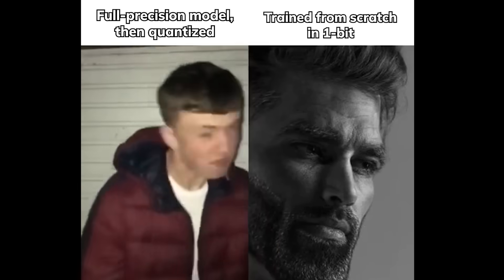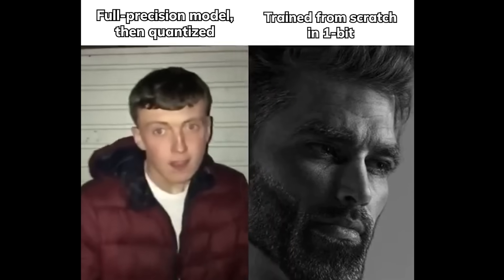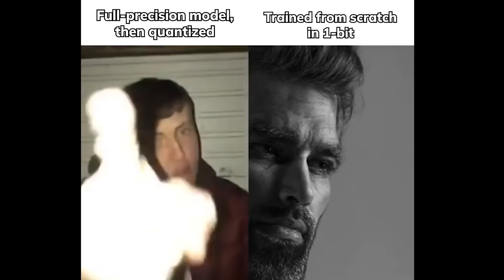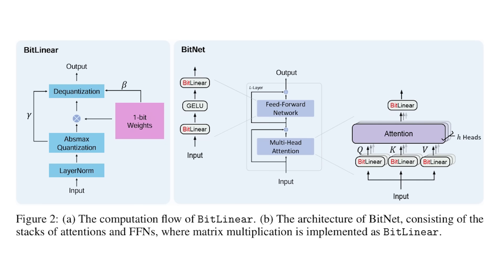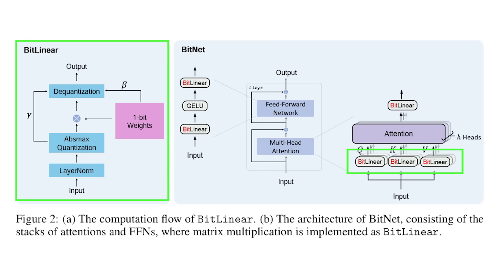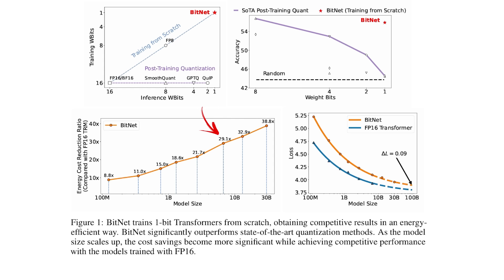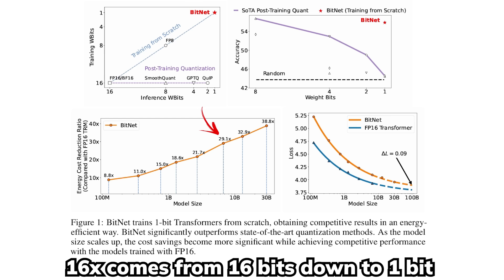Unlike models quantized after training in full precision, BitNet is trained from the ground up with this 1-bit setup, giving much better stability because the goal is to build representations from scratch rather than salvage performance. Even though only certain layers like linear projections can implement 1-bit weights, they were able to substitute bit-linear components to replace standard matrix multiplication, using much less compute. It still uses 30 times less energy compared to a 7 billion parameter full-precision model — even better than the 16 times initially expected.